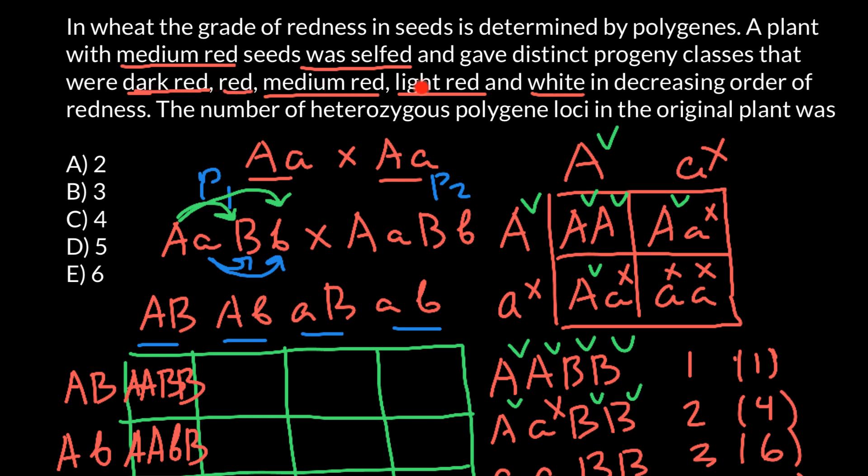As you see, the correct answer is that this quantitative trait is under the control of two loci, both of which are heterozygous. So the answer is variant A. This is all for today. Thank you for your attention.